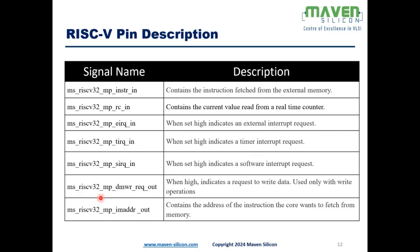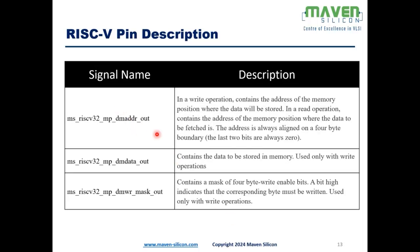DM_WRITE_REQUEST_OUT is an active-high output signal indicating a request to write data to the data memory; it is used only during write operations. IM_ADDR_OUT comes from the program counter and contains the address of the next instruction to be fetched from instruction memory. DM_ADDR_OUT carries the data memory address — during write operations it holds the target write address; during read operations it holds the address from which data is loaded. The address is always aligned on a 4-byte boundary, meaning the last two bits are always zero.